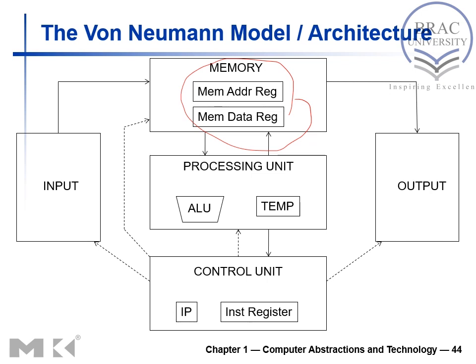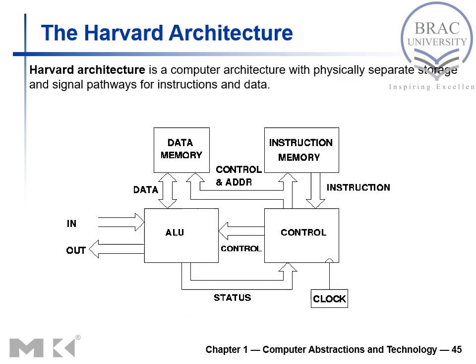Other than Von Neumann, we have the Harvard architecture. Comparing the two: in the Von Neumann model, there is only one memory used for both data and instructions. In Harvard architecture, there are separate data memory and instruction memory, each with their own bus.